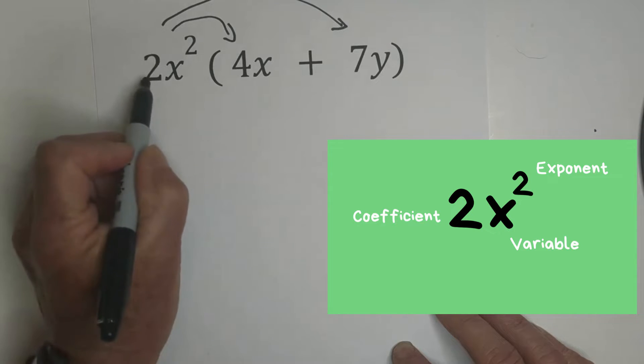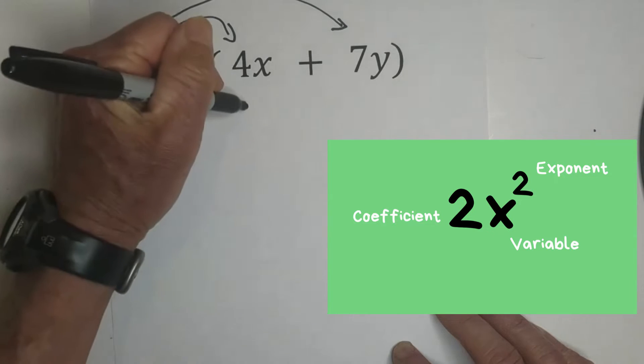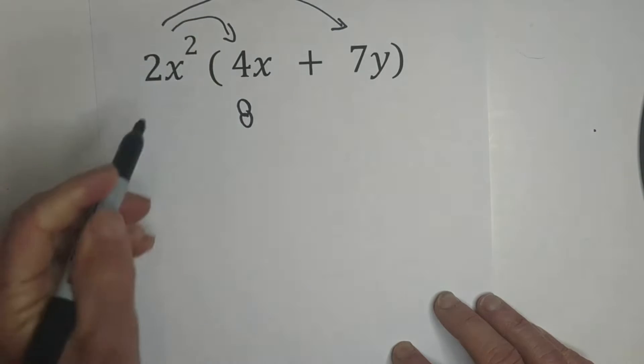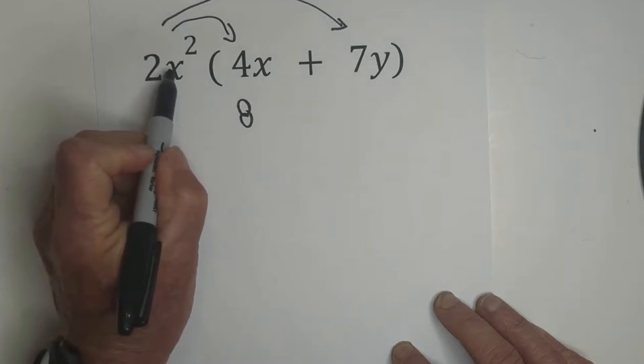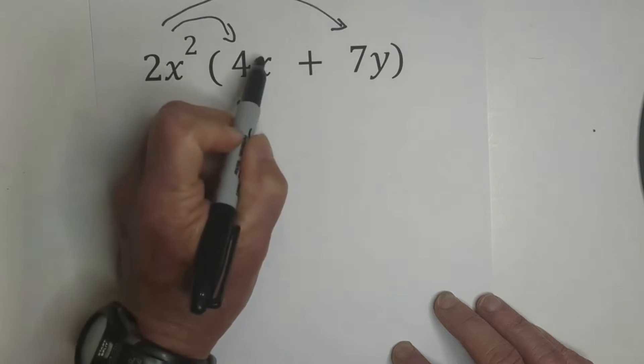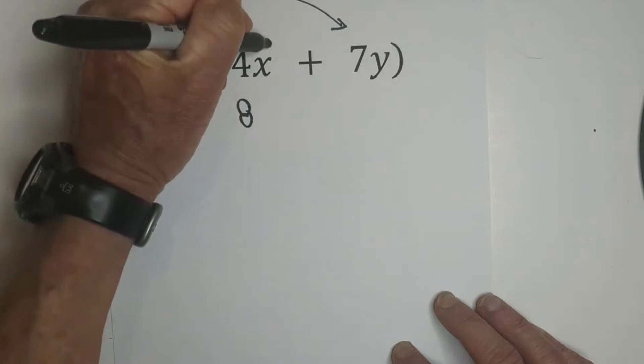Basically what we're doing is we're going 2 times 4, which is 8, and then we have like bases, x and x. So when you have like bases and exponents, this technically will be a 1.